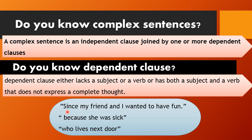The word 'since' is a conjunction — I cannot separate it from the rest of the sentence. 'My friend and I wanted to have fun' by itself is an independent clause, but since 'since' is part of this clause, I cannot erase it, and if you read it all together it does not give you a complete meaning. Similarly, 'because she was sick' — 'she was sick' alone is independent, but adding 'because' changes it into a dependent clause. The same applies to 'who lives next door.' Adding those connectors or conjunctions turns an independent clause into a dependent one.